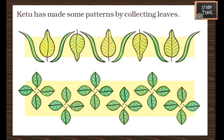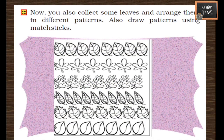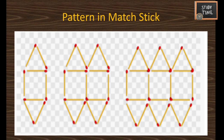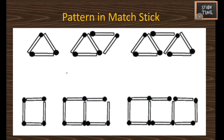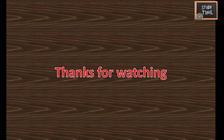Next, Ketu has made some patterns by collecting leaves. This is a pattern made with leaves — you can also try different patterns by arranging leaves in different ways. Now you can collect some leaves and arrange them in different patterns. Also, draw patterns using matchsticks — you can make many patterns using matchsticks. Try exploring the patterns around you: in rangoli, in clothes, in walls, in windows, in tiles. Observe each pattern and see how it is arranged. You can also make similar patterns using leaves, matchsticks, and arrows.